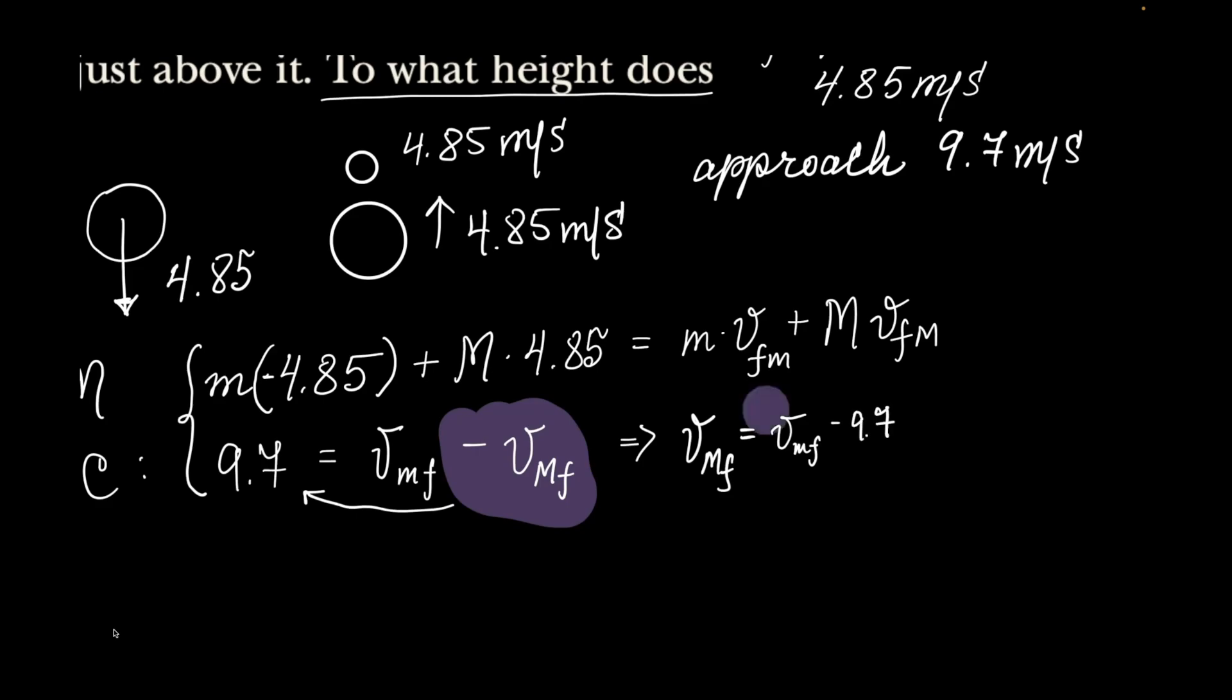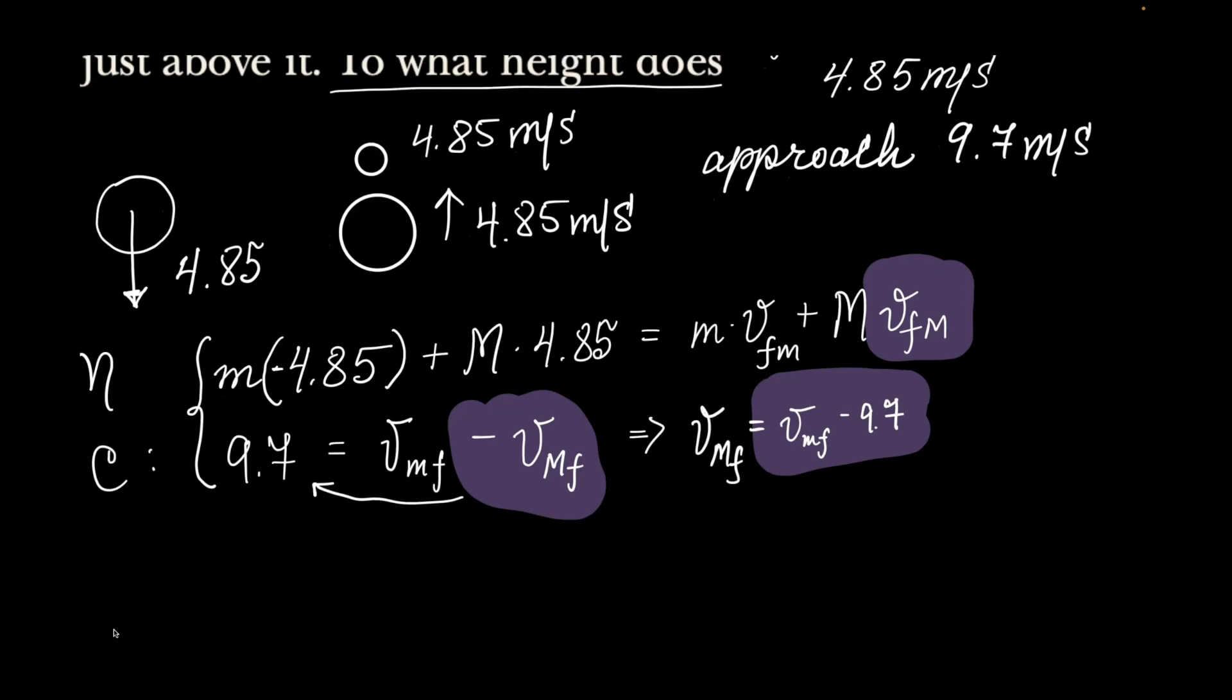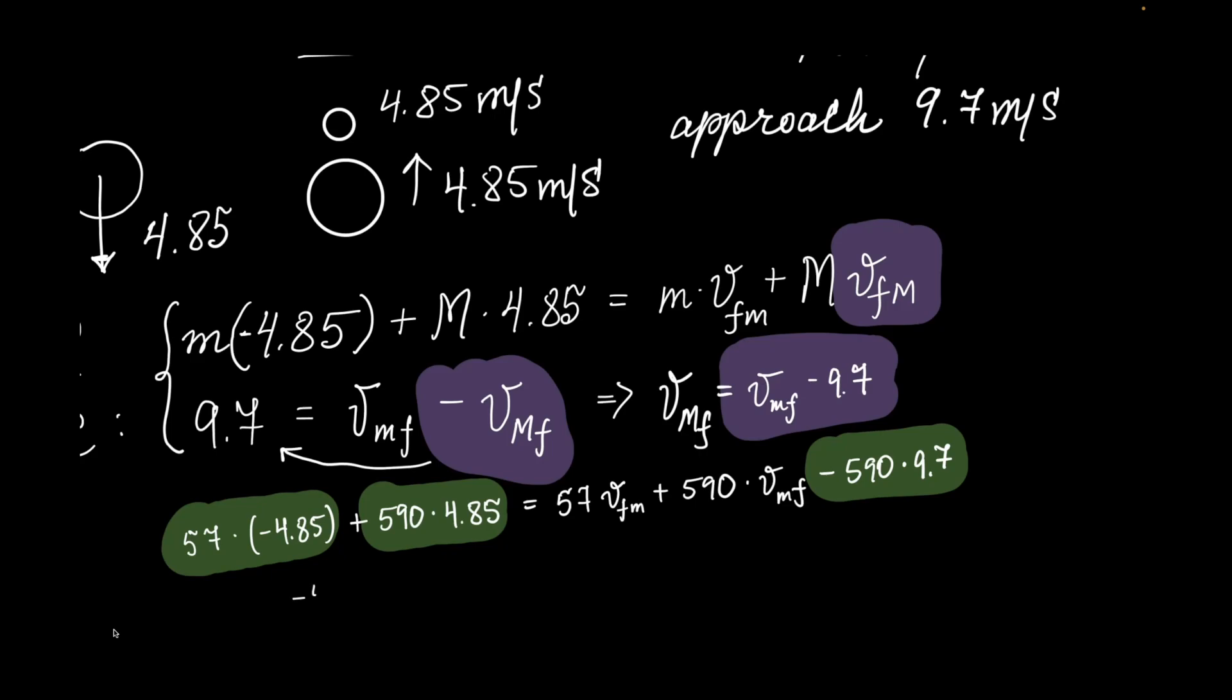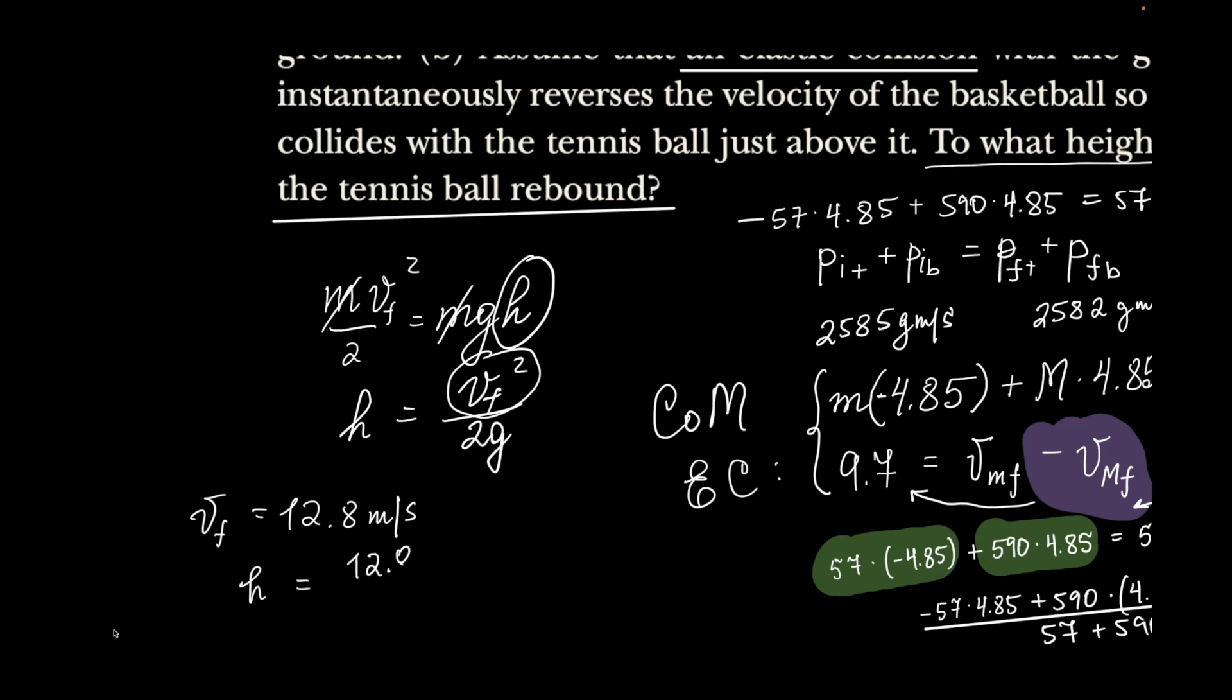And then I'm going to grab this and replace the velocity of the big ball with that. And that way, I will only have the velocity of the tennis ball left. Now I'm going to consolidate what I got. It's going to be -57 times 4.85, this will go to the left with a plus, so plus 590 times 4.85 plus 9.7, all of that divided by 57 plus 590 would be equal to my Vm_final. I got 12.8 meters per second. That's the rebound velocity of our tennis ball. Then the height is going to be that 12.8² over 19.6, which is 8.4 meters.